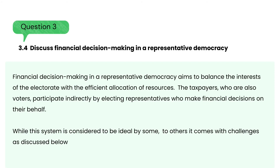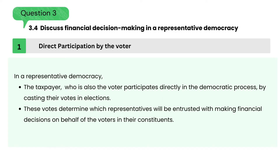Financial decision-making in a representative democracy aims to balance the interests of the electorate with the efficient allocation of resources. The taxpayers, who are also voters, participate indirectly by electing representatives who make financial decisions on their behalf. In a representative democracy, the taxpayer, who is also the voter, participates directly in the democratic process by casting their votes in elections. These votes determine which representatives will be entrusted with making financial decisions on behalf of the voters in their constituents.